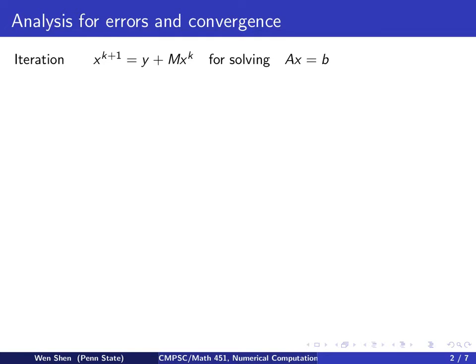When we consider the iteration in the general form, that is x^{k+1} equals to some given vector y plus a coefficient matrix M times x^k, that's an iteration method for solving Ax equals b.